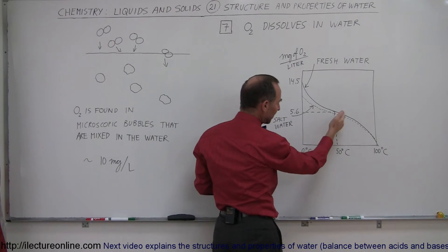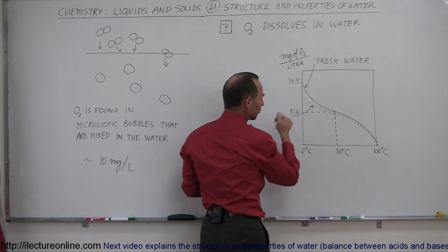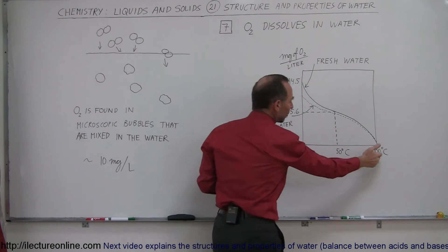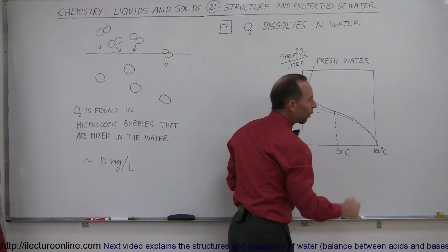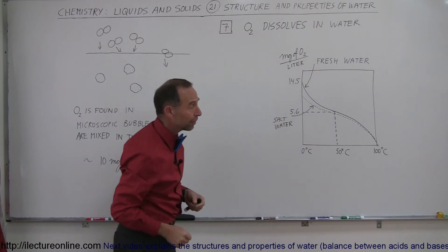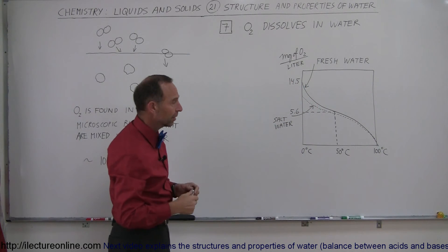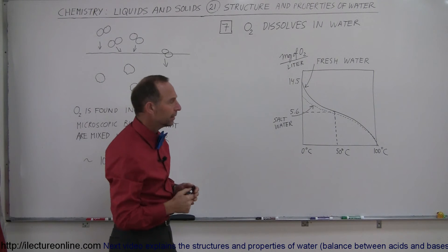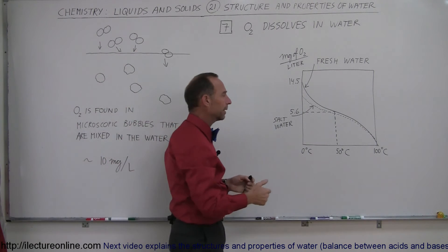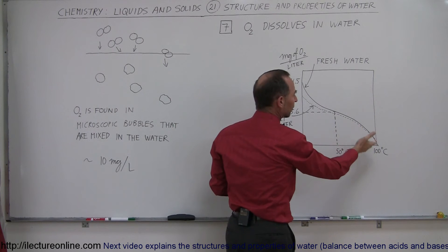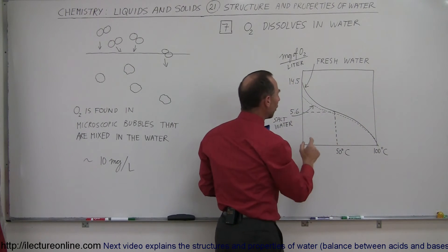At 50 degrees centigrade, full saturation drops to about 5.6 milligrams. And at 100 degrees centigrade — water is boiling at that point, at standard pressure conditions — water cannot hold the oxygen; the oxygen will come out at that point.